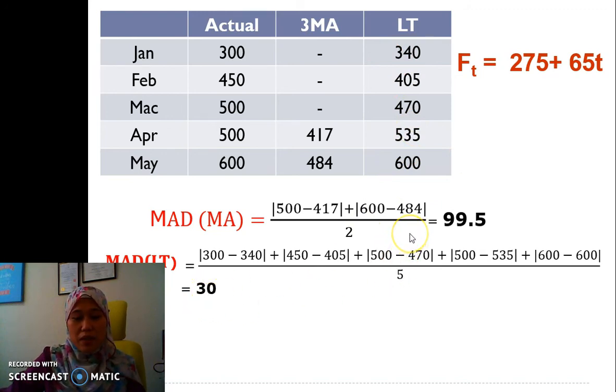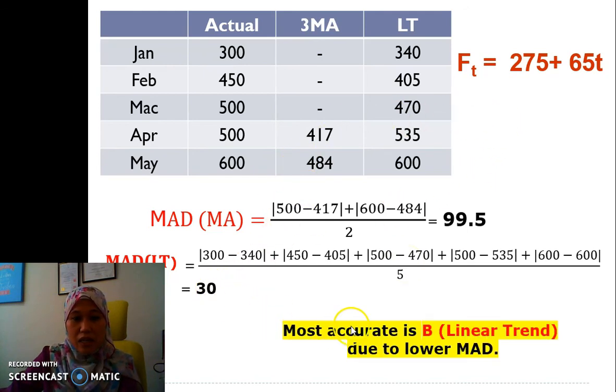Now, for the MAD to be considered accurate, we need to make sure it is the minimum. So for this case, we found out that the most accurate is the linear trend, the B method, in which they have the smallest MAD.